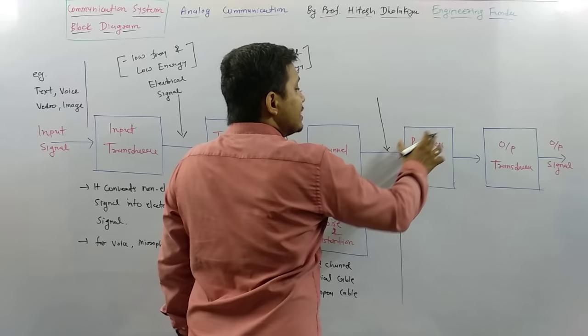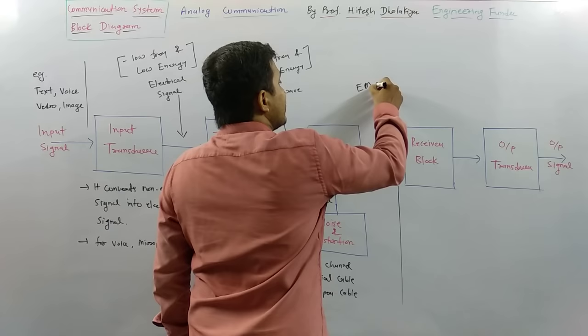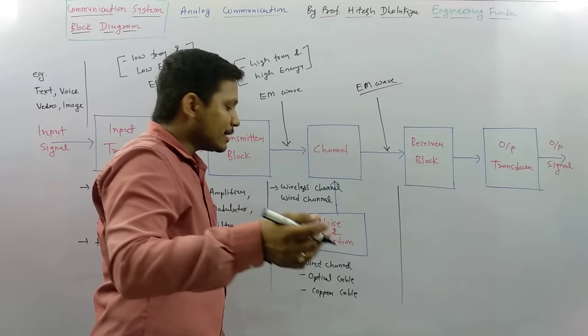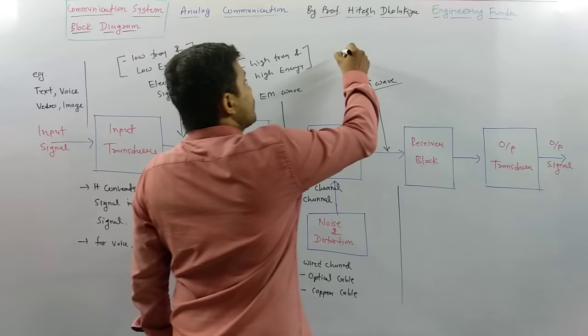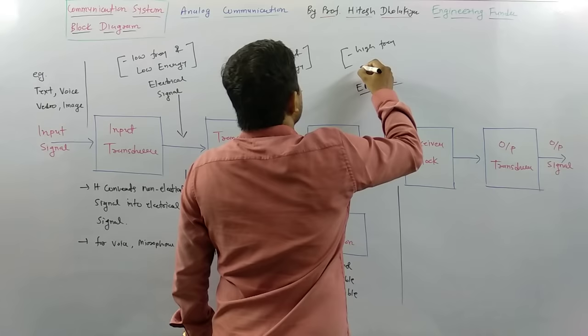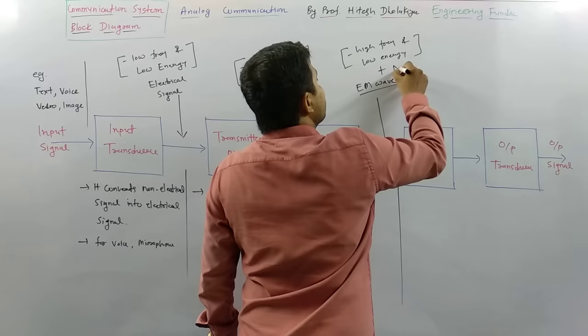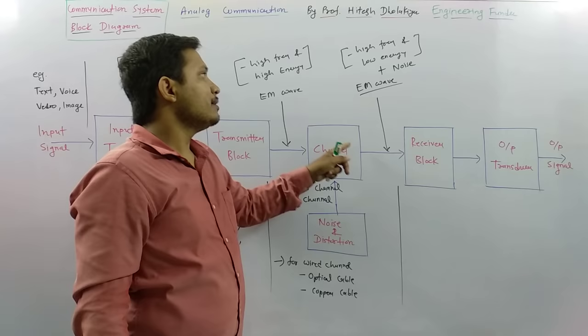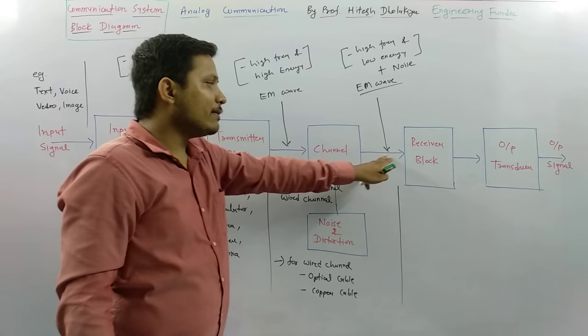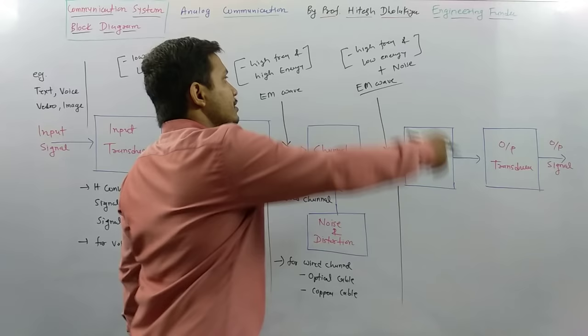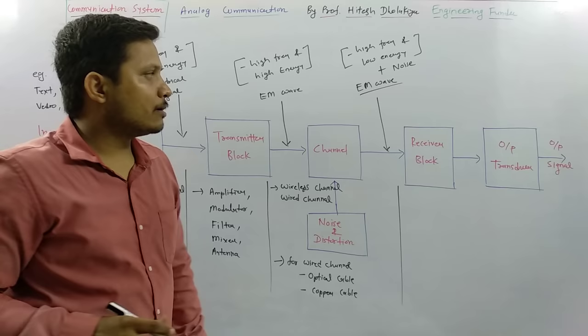After travelling a longer distance, the signal received at the receiver block will be an EM wave in the case of a wireless channel, or an electrical signal in the case of a wired channel. The properties of this received signal will be high frequency and low energy, plus noise — that is what is available at the receiver block.